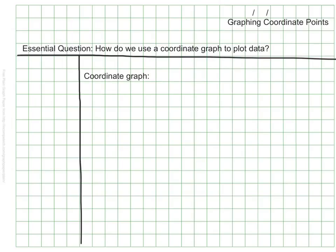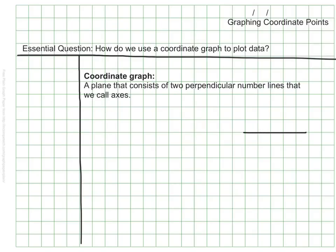The first term is coordinate graph itself. A coordinate graph is a plane that consists of two perpendicular number lines that we call axes. That means there is a horizontal number line that goes one way and a vertical number line that connects and goes the other way.